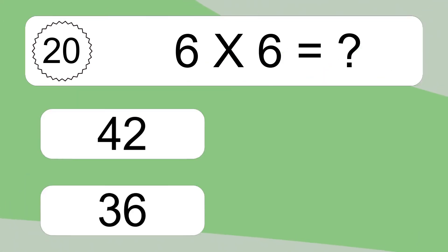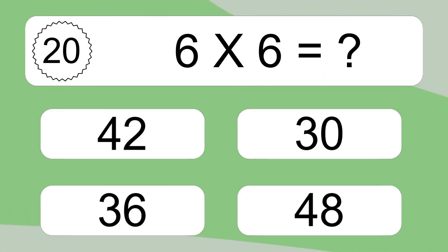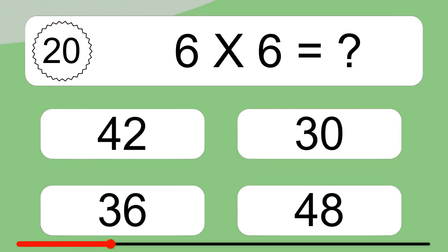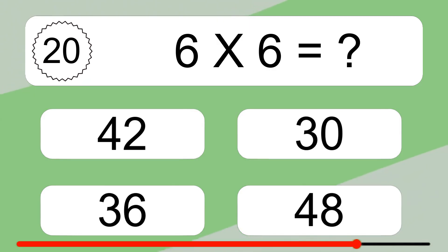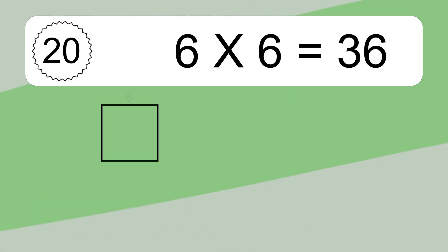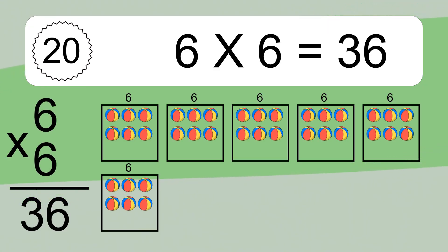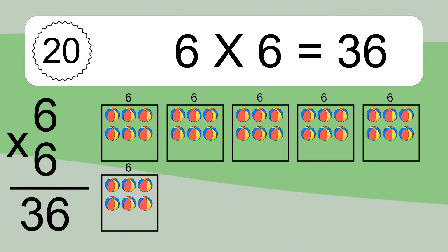6 times 6 equals what? 6 times 6 equals 36.